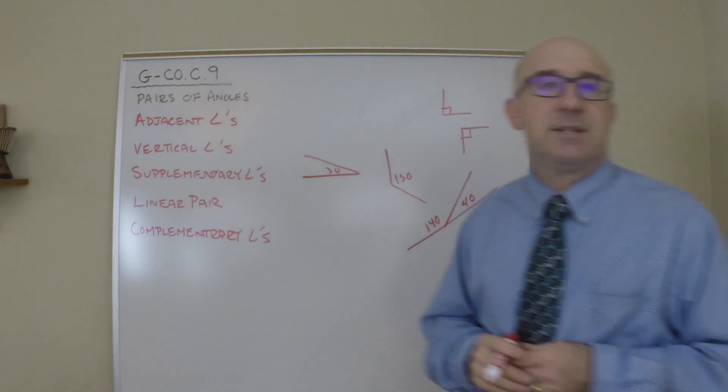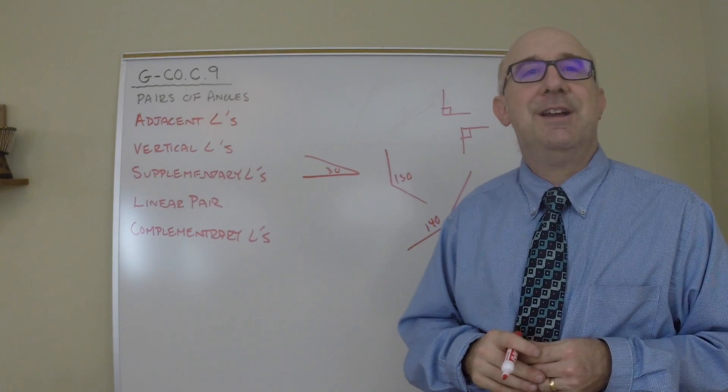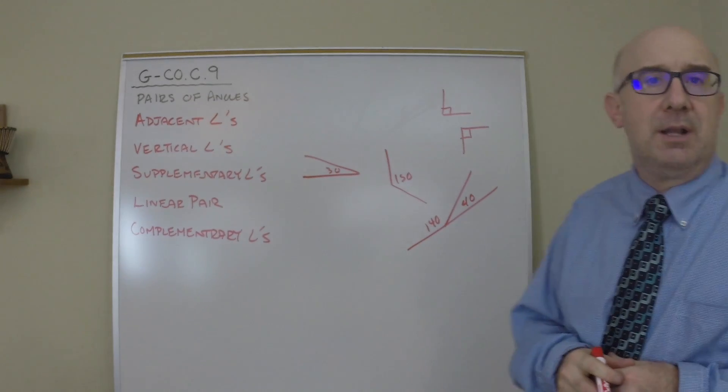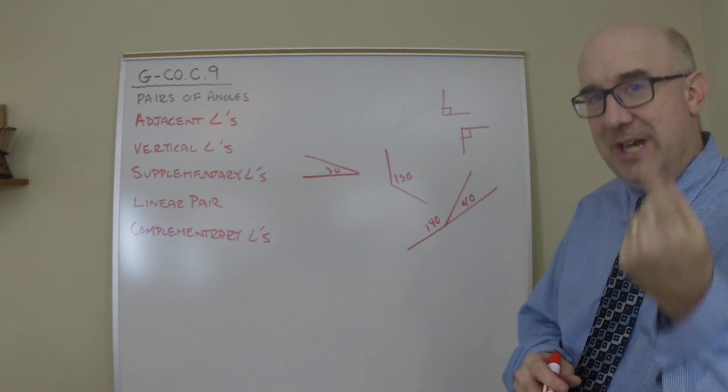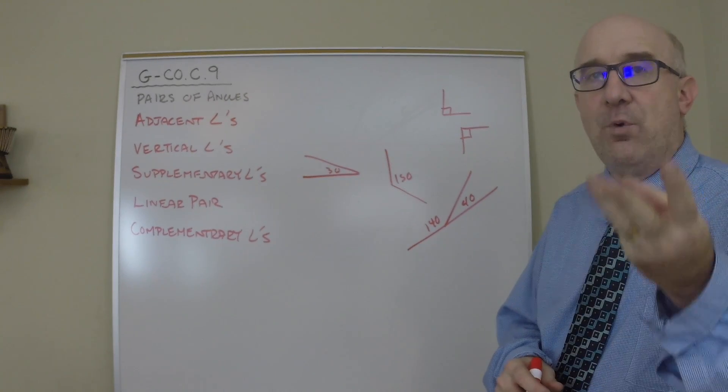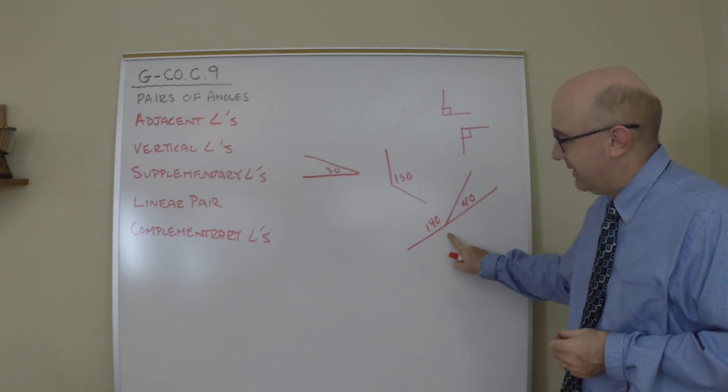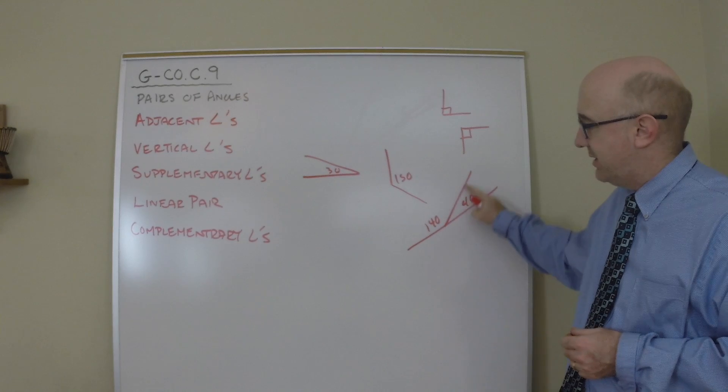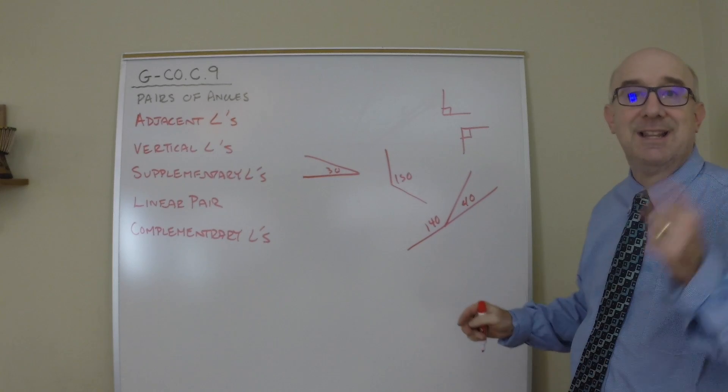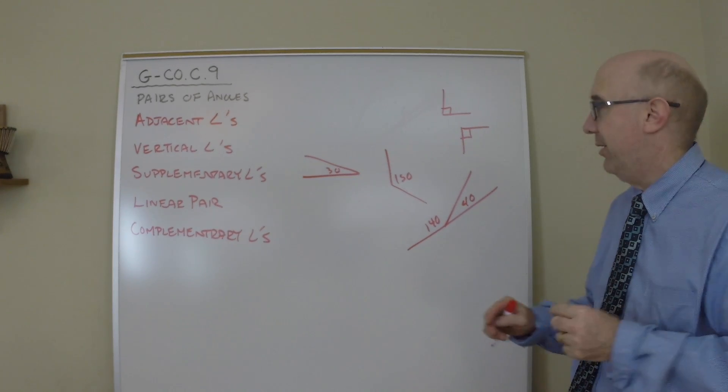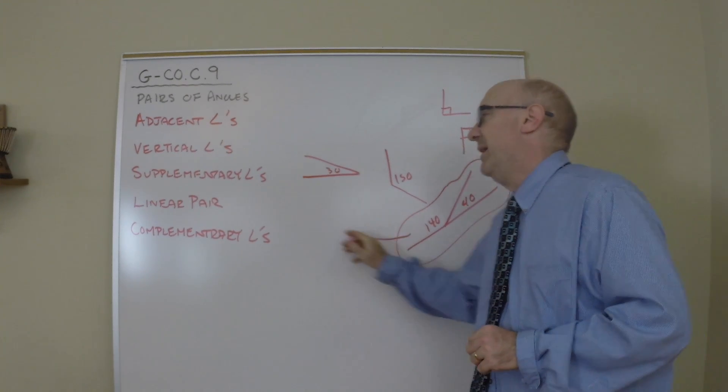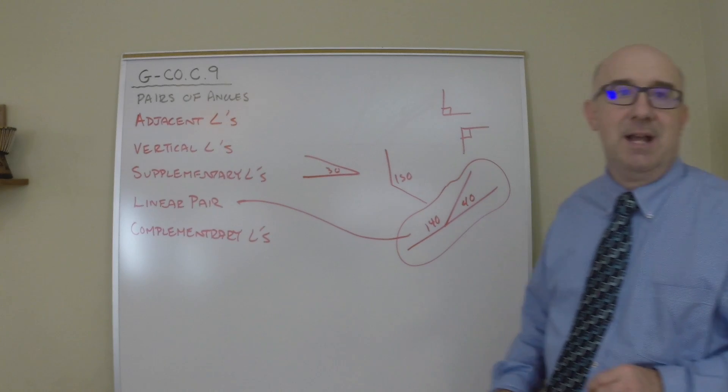A specific subset of the supplements is the linear pair group. If you are a linear pair, you are adjacent angles that are supplements and form a line. This is a nice example of a linear pair. Adjacent angles supplements forming the line. A linear pair. So this is a special type of supplement angle and it's known as a linear pair.